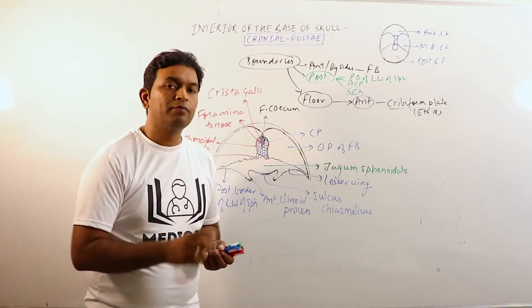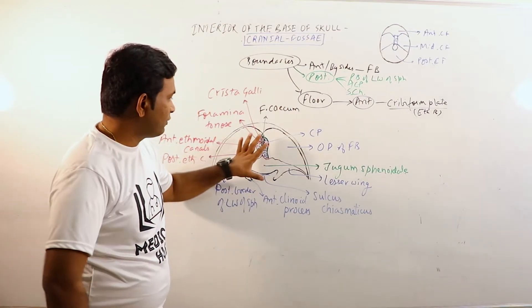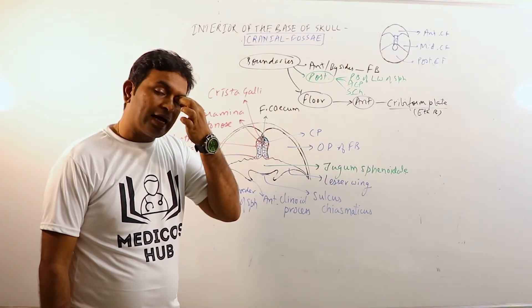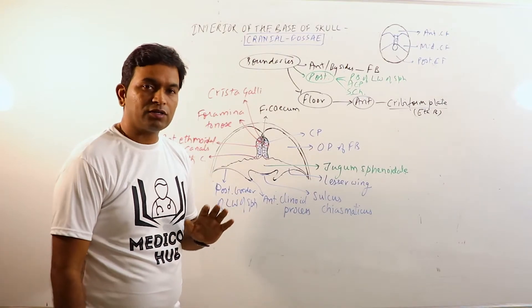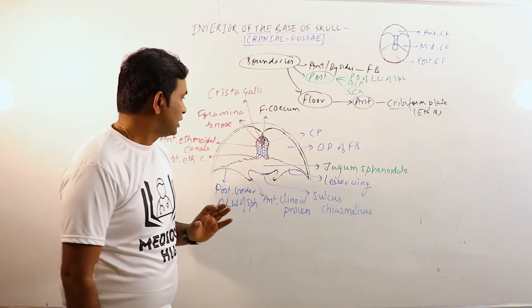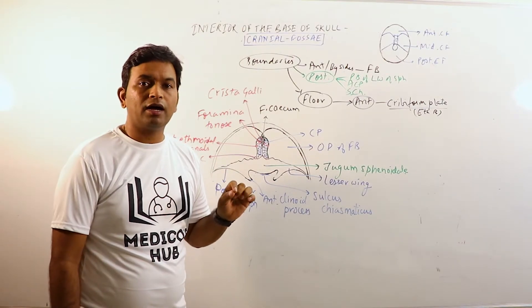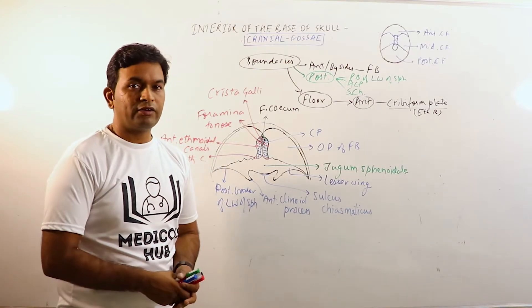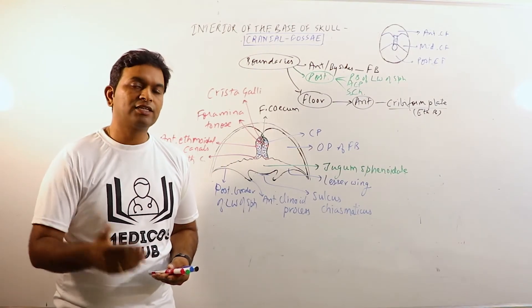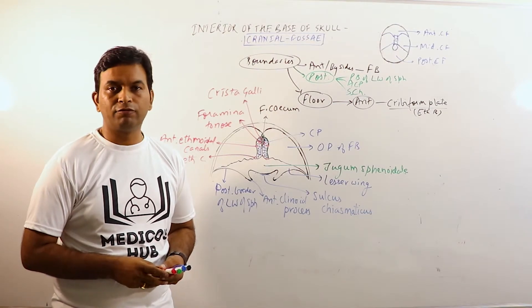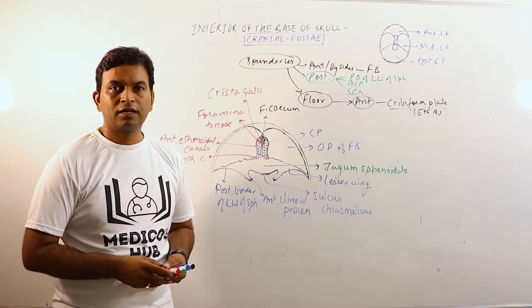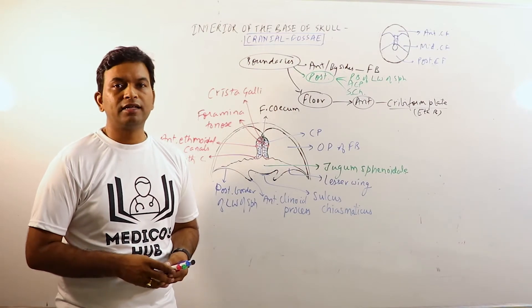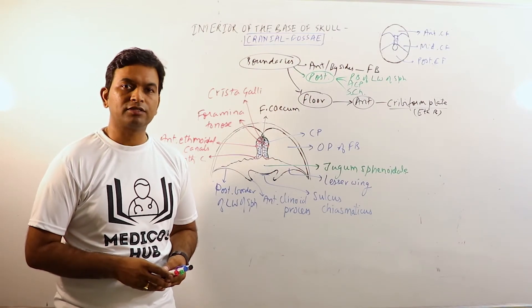The clinical importance is that if a fracture of the anterior cranial fossa occurs, then a black eye may occur due to seepage of blood into the eyelids, and CSF may also come out through the nose. In the next lecture we will be discussing the middle cranial fossa. Please hit the like button, share, and subscribe to our channel to get the latest updates and notifications.